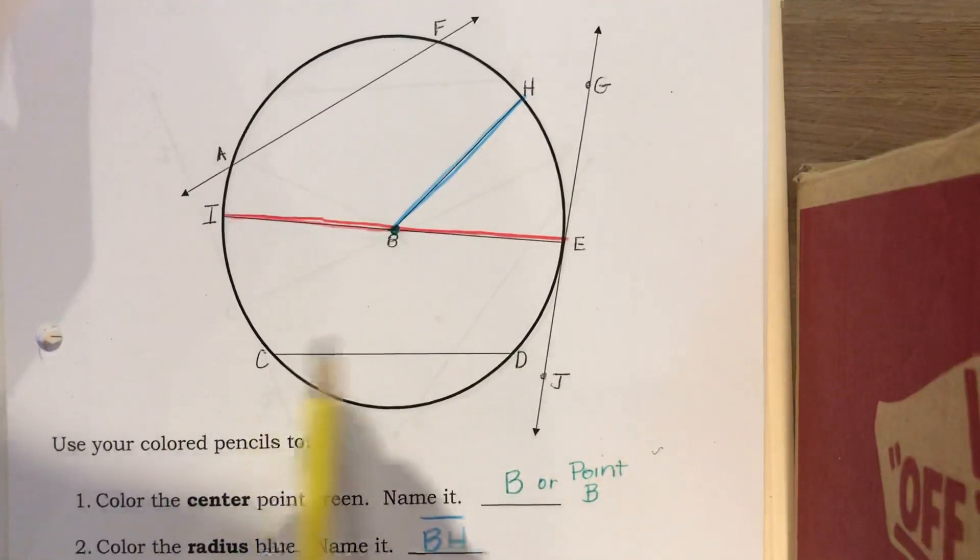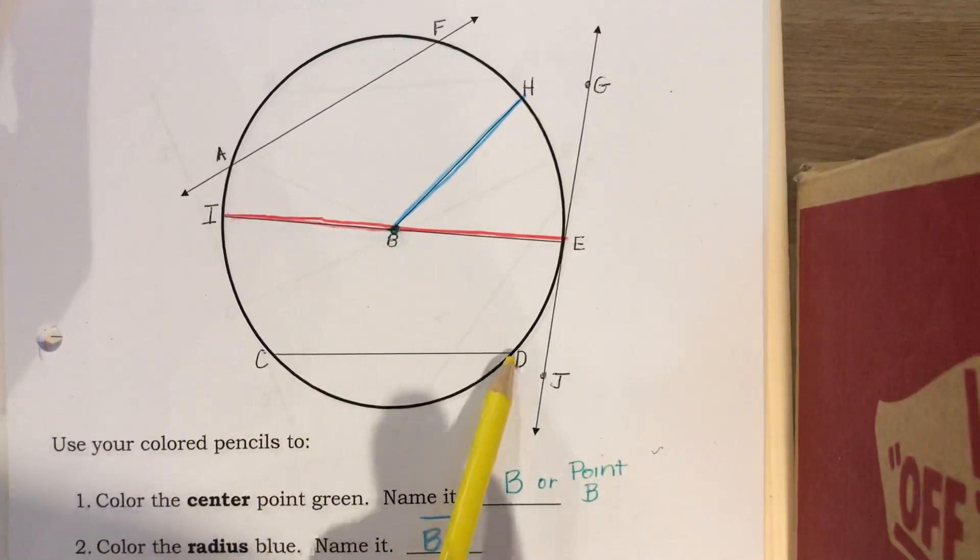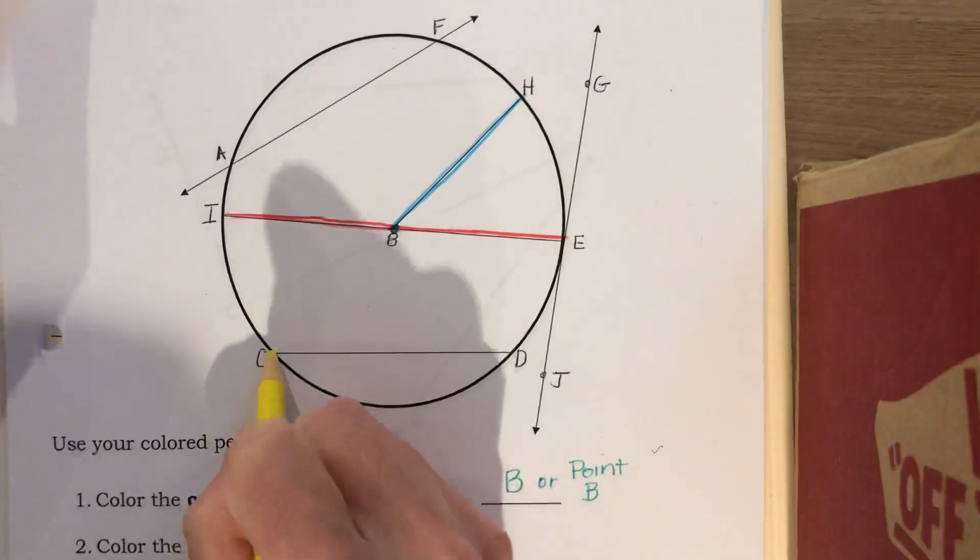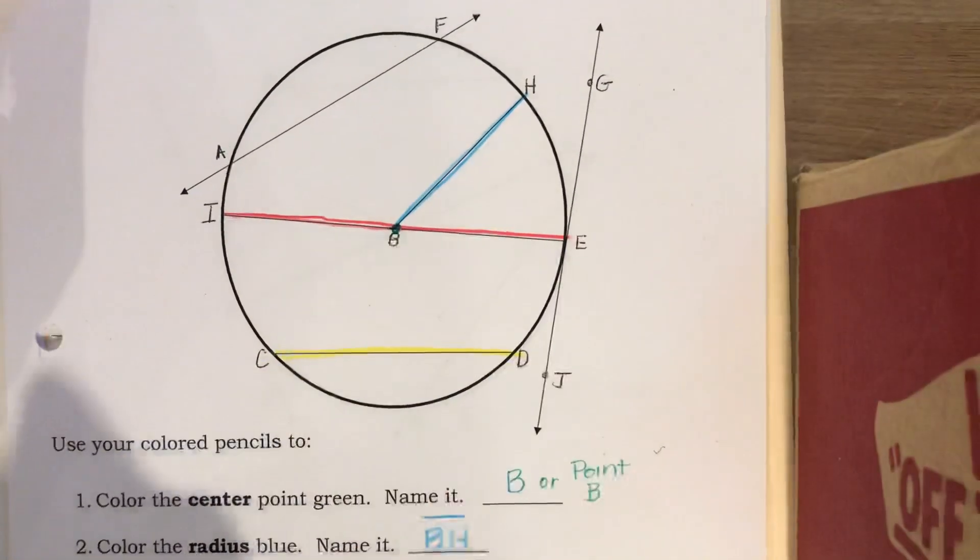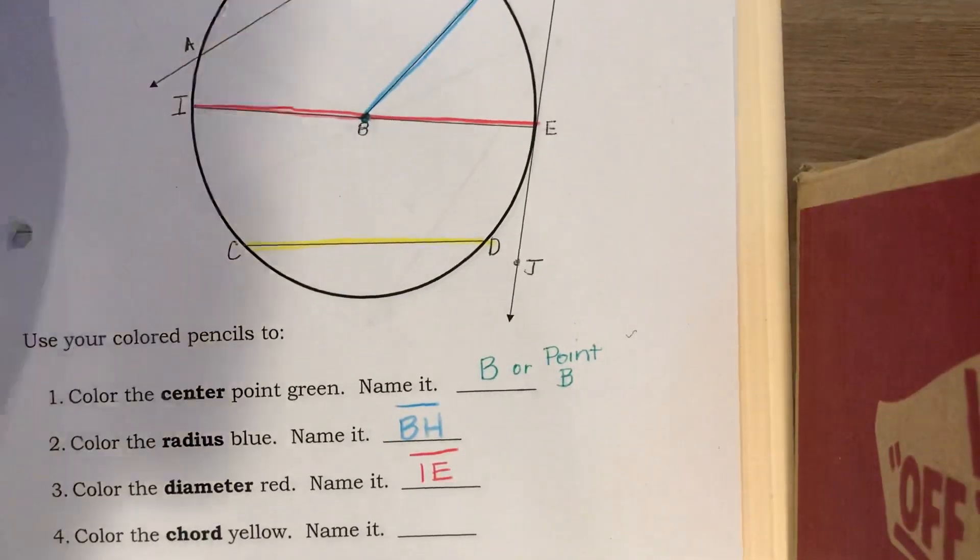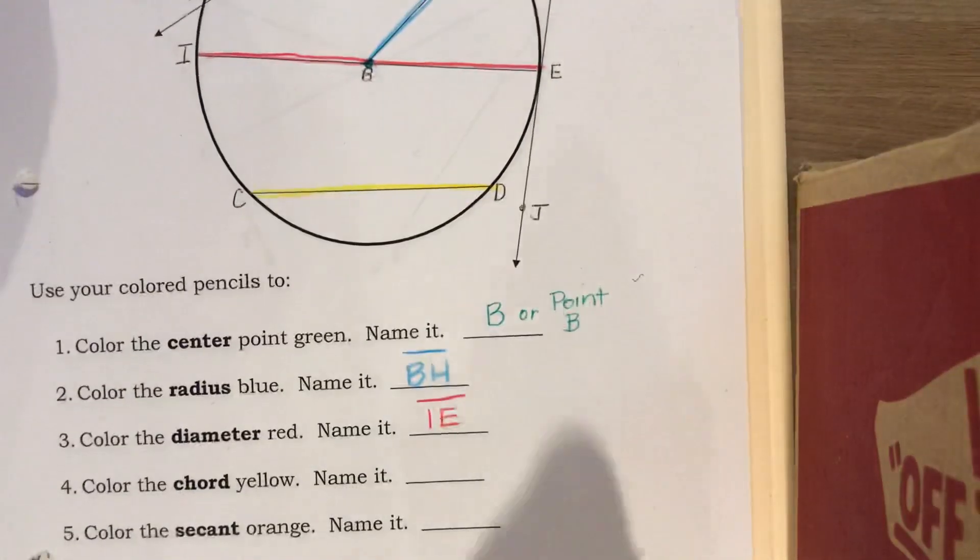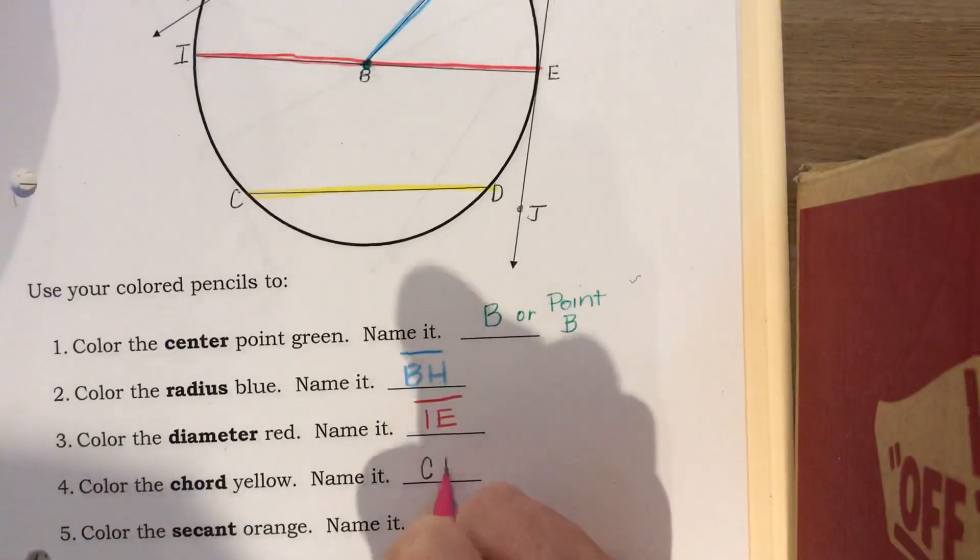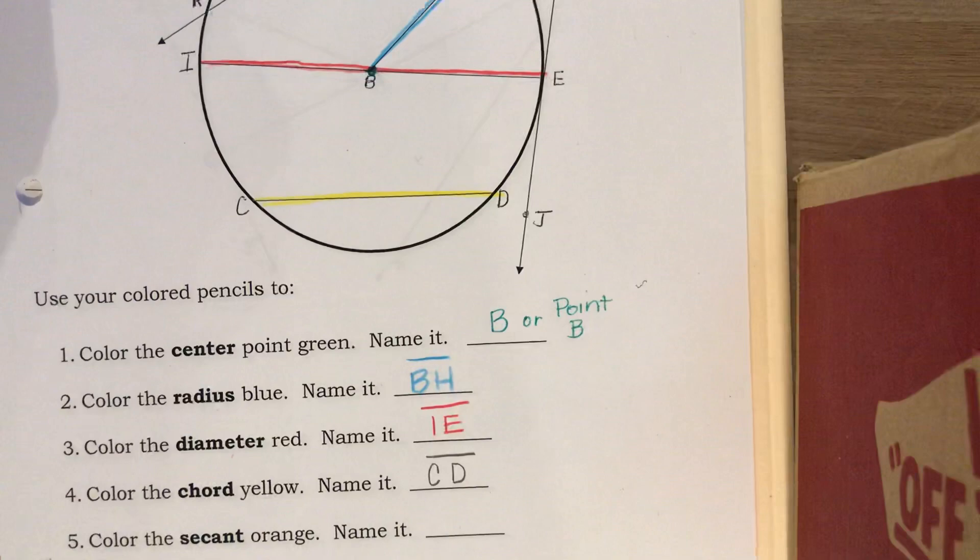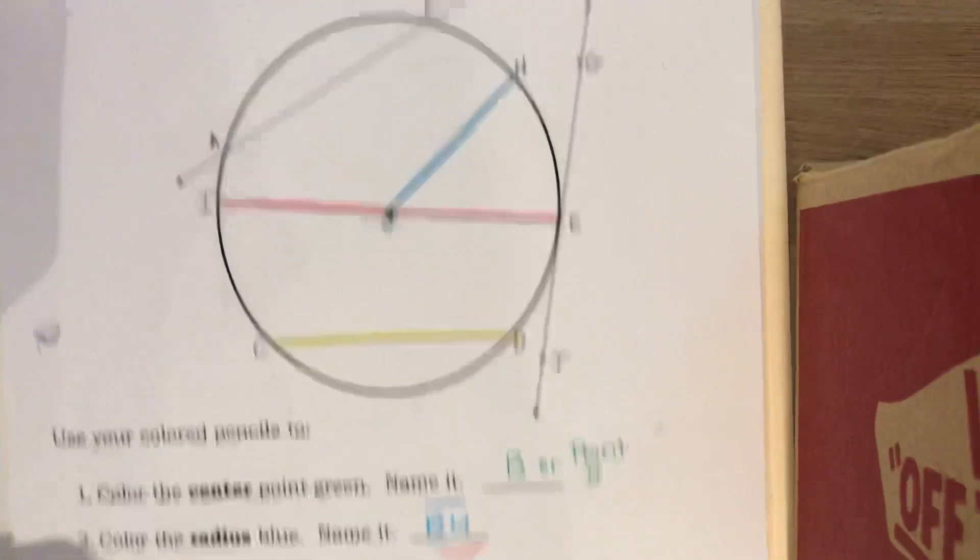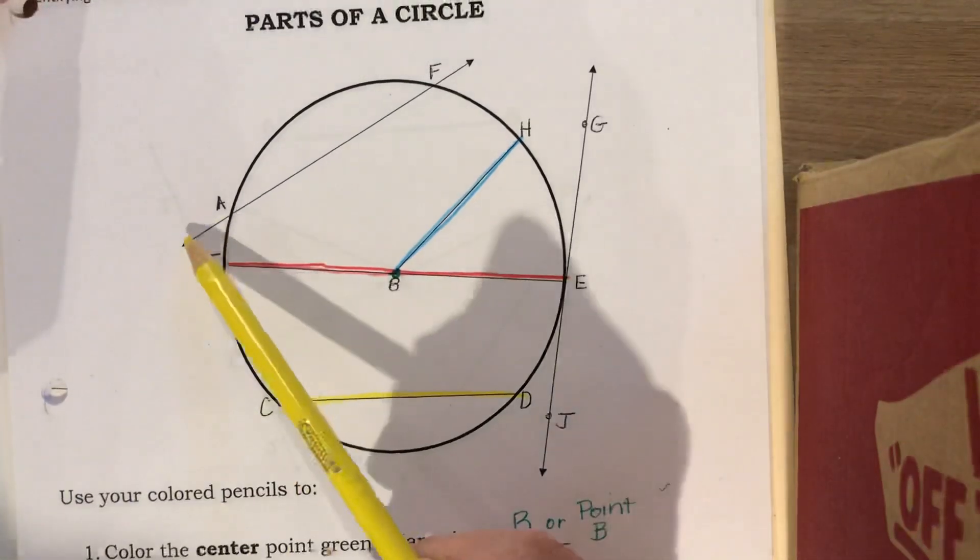A diameter is a special type of chord, but I want to find something else. Let's take a look down here at CD. CD is a segment and it touches the circle twice. Let's go with CD. I'm going to write this one in pencil because I'm afraid the yellow might not show up, so CD with our segment bar on top.